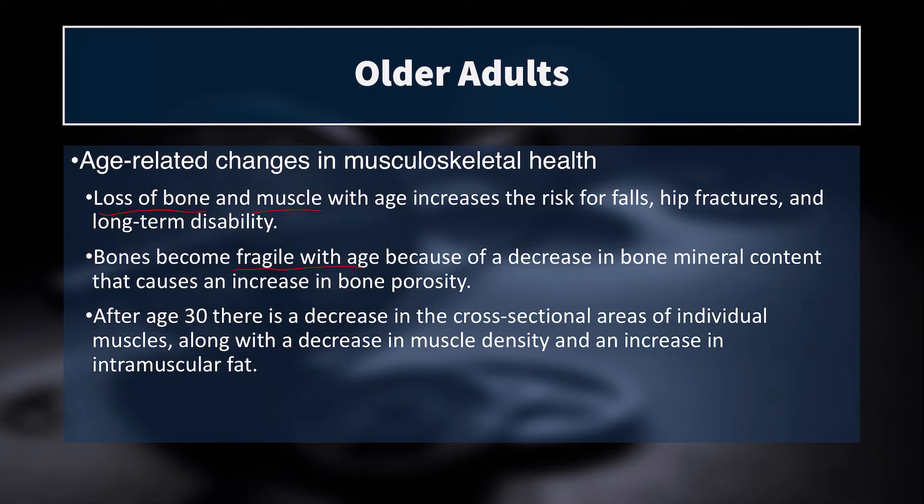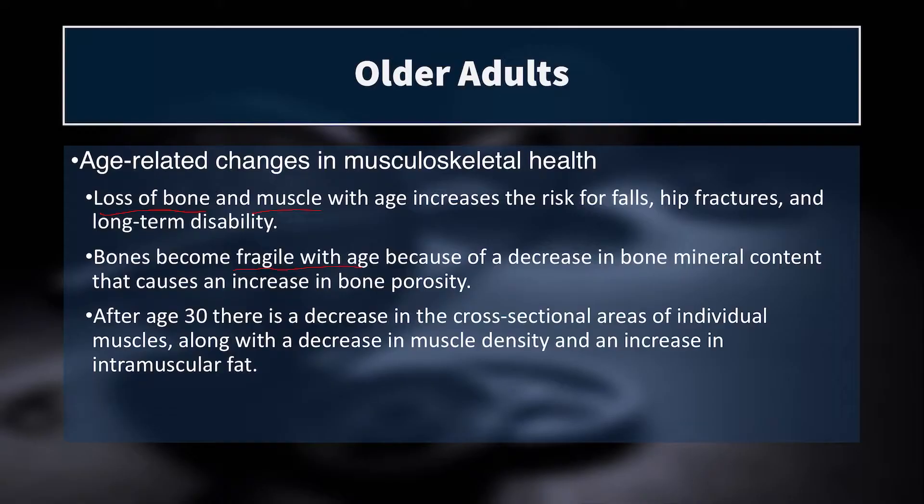After age 30, there's a decrease in the cross-sectional area of individual muscles. With training we can reverse that. There's also a decrease in bone mineral density and an increase in intramuscular fat. So your muscles literally become more fatty and less dense — the muscle tissue itself is of lower quality as you age. It not only decreases in cross-sectional area, but in quality as well.